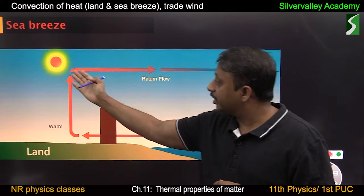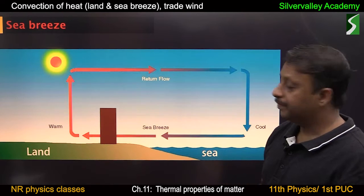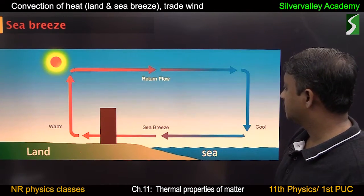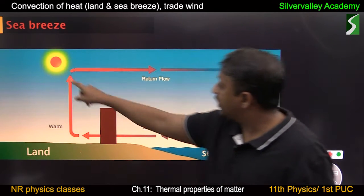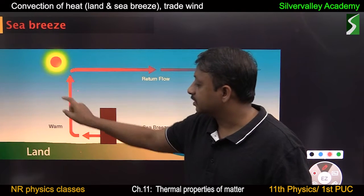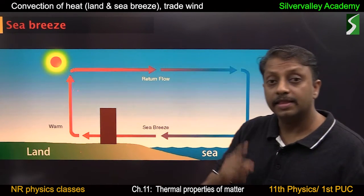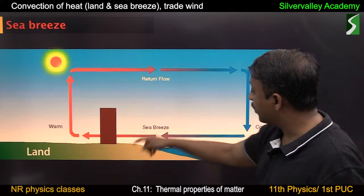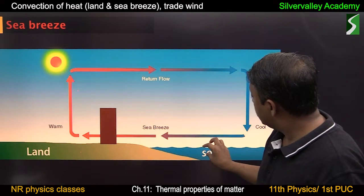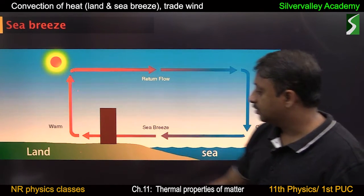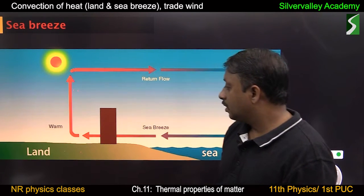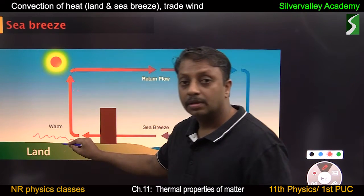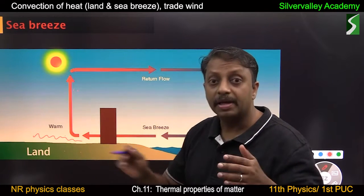Sea breeze is observed during daytime. Observe the diagram. There is land and there is sea. During daytime, temperature of land increases faster than temperature of sea water, and that is because of specific heat capacity. Specific heat capacity of water is very high compared to land. That is why raising the temperature of sea water is less — so the land is heated faster. That part of air which is close to land absorbs heat energy. After absorption, density decreases — it becomes light.